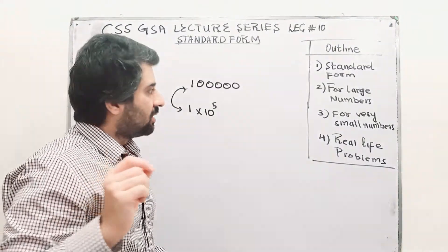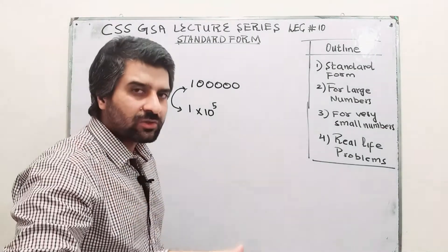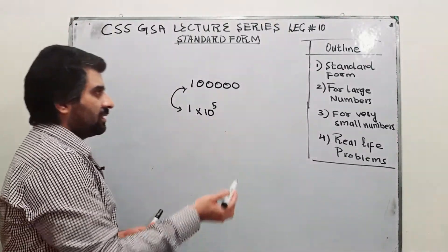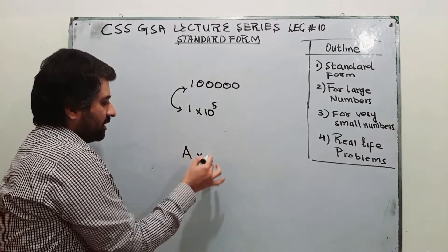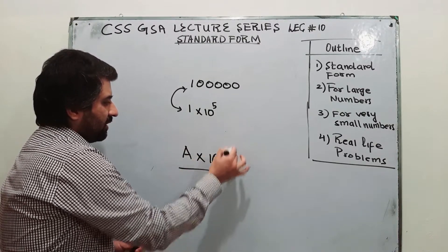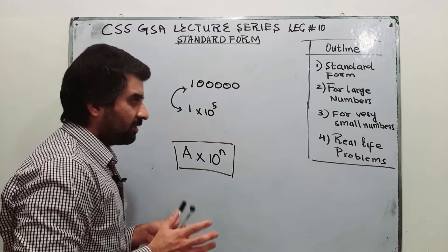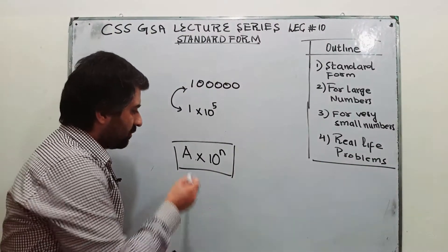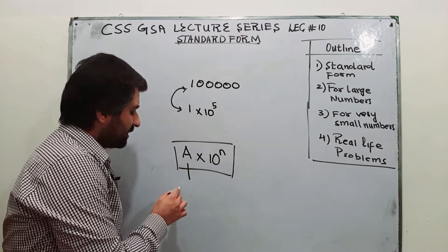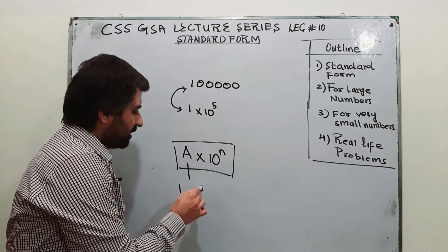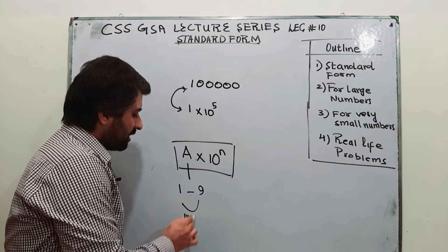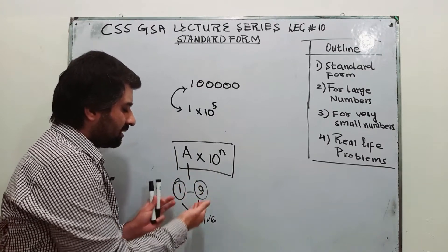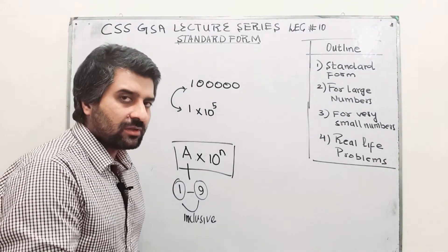That is standard form and you can do this for small numbers as well. The definition is a into 10 raised to the power n. Whenever you express your number in this form, this is standard form. Now, what is a? A lies between 1 and 9, they are inclusive — meaning 1 and 9 are included and all the numbers between 1 and 9 will be part of this.